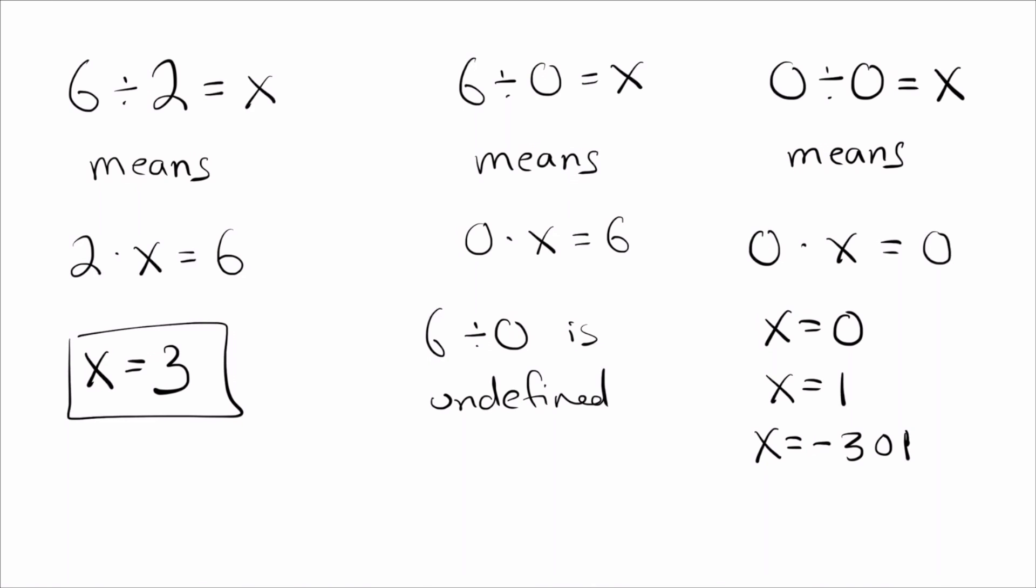But the problem is, for math, we always want things to give us one answer, right? If you and your friend are both doing the same problem, you should always get the same answer for it if you're doing it correctly. So, since there is no single value of x that works, again, we have to say that 0 divided by 0 is undefined.